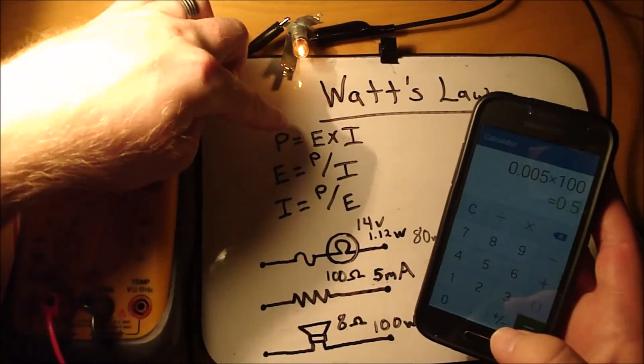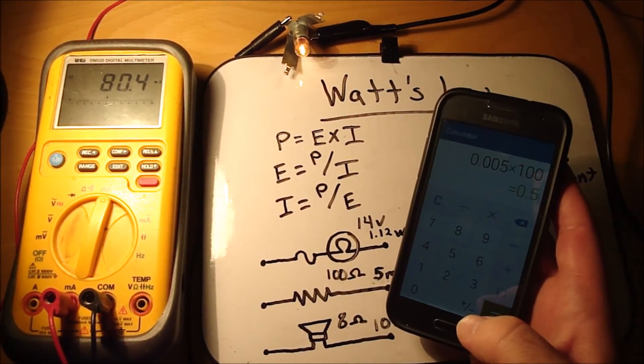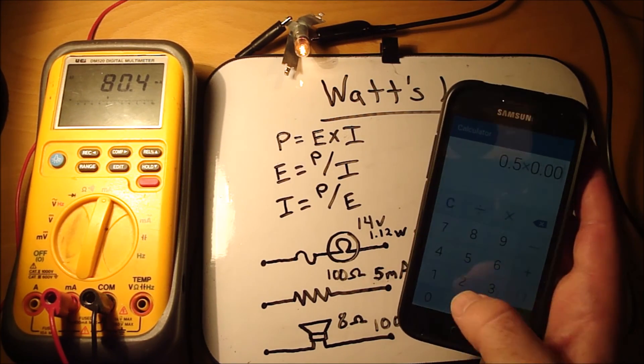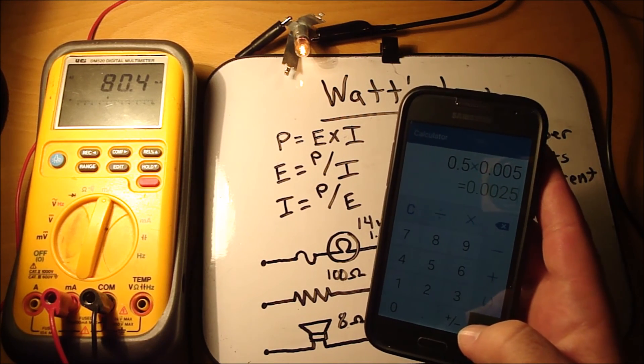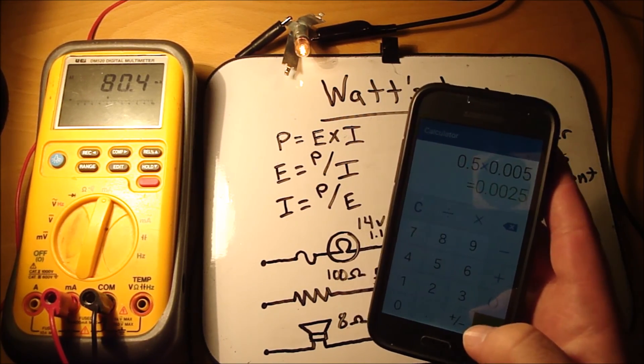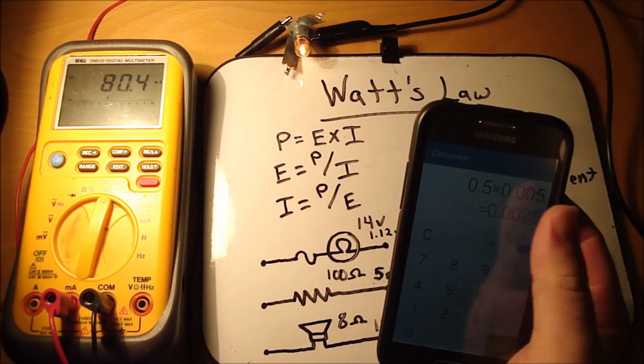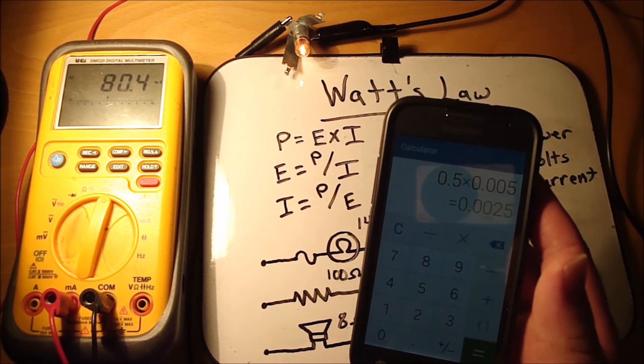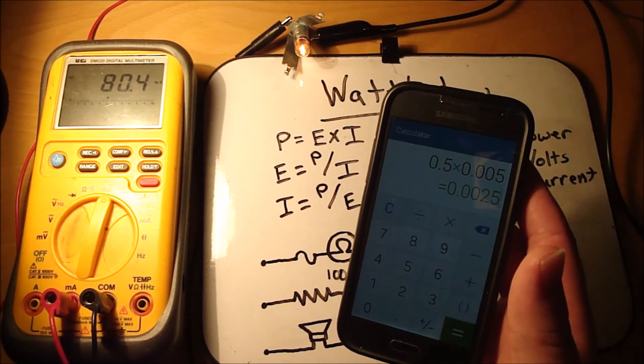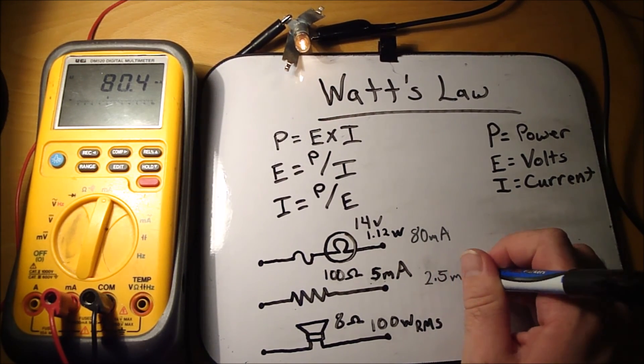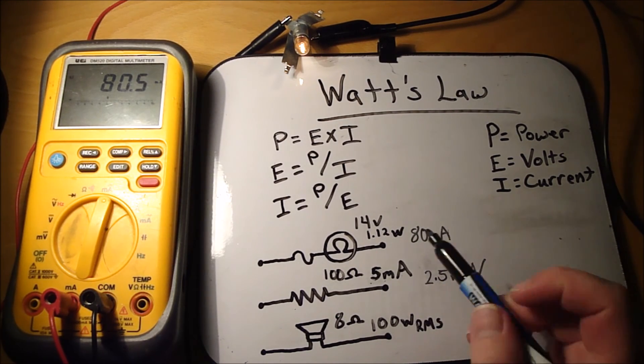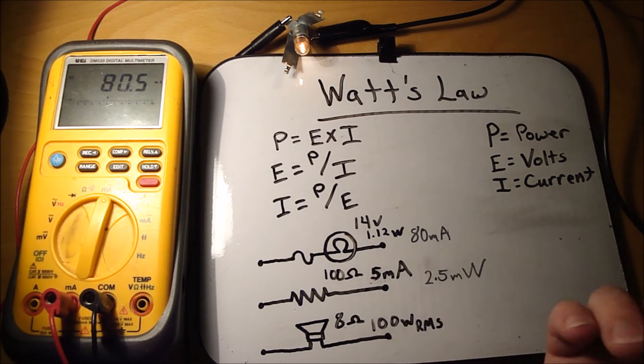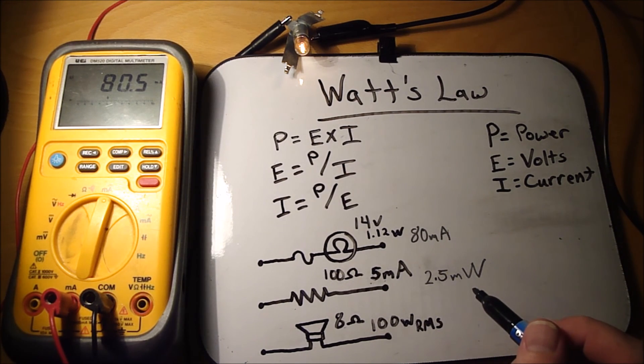So to get the power, you would take your volts times your current draw, so that would be .5 volts times your .005 amps, which isn't even a quarter watt resistor that you would need. So you need a very small resistor, it's just a 2.5 milliwatt dissipation across that resistor. So we know we got 2.5 milliwatts being dissipated across that 100 ohm resistor. So we know we need to get a higher than 2.5 milliwatt resistor.